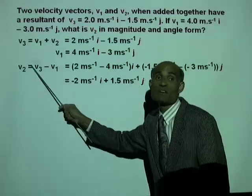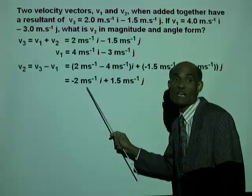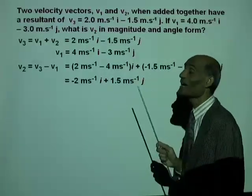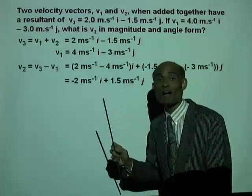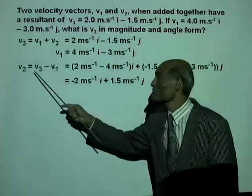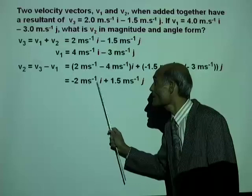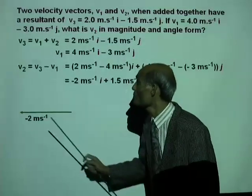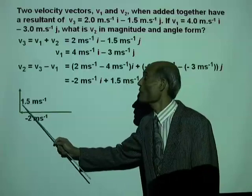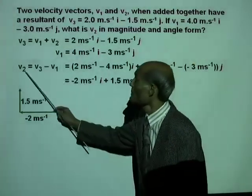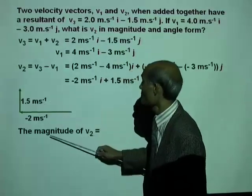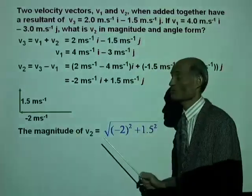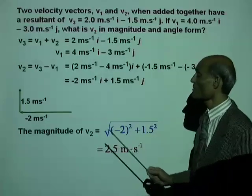We have obtained vector V2 in terms of its x and y components: negative 2 m/s i and positive 1.5 m/s j. Now we need to find the magnitude and angle. The magnitude of V2 is square root of x squared plus y squared, where x is negative 2 m/s and y is 1.5 m/s. The magnitude of V2 is square root of x squared plus y squared, and that equals 2.5 m/s.